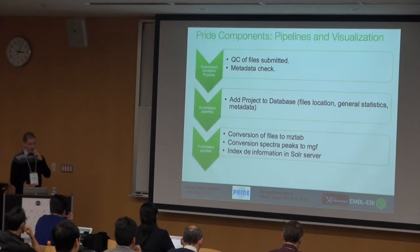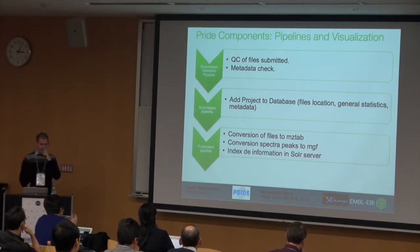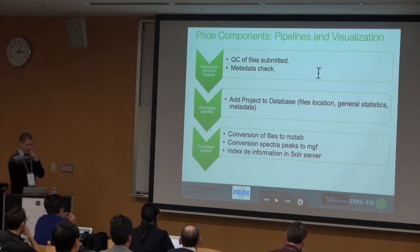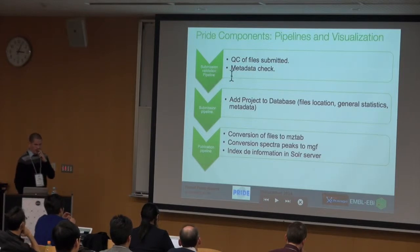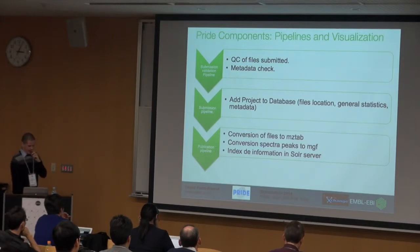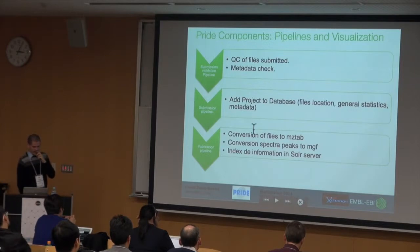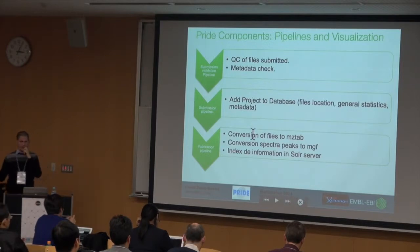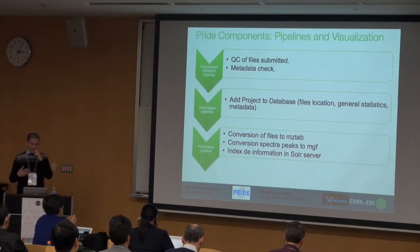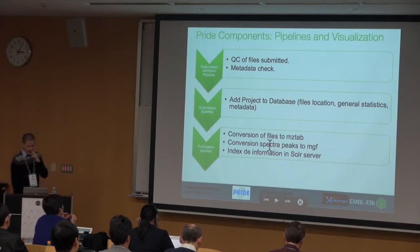The pipeline to process all files in PRIDE is based on three main components: the submission and validation pipeline, which checks all quality measures related to the files provided; the submission pipeline, which adds all project information to a database; and then we convert all files — normally mzIdentML or PRIDE XML — to mzTab-basic and to MGF, and index all of this information in the Solr server.